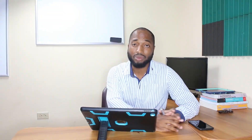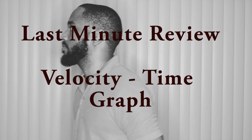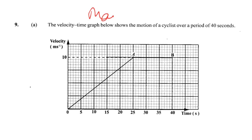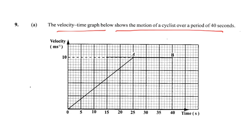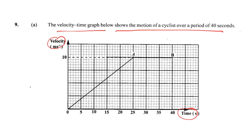Velocity-time graph. So in the question here, this is a very recent question — I think this is May 2017. We've been asked: the velocity-time graph shows the motion of a cyclist over a period of 40 seconds. Now, this is a velocity-time graph. The other type you could get is a distance-time graph. On a distance-time graph, the gradient represents speed. On a velocity-time graph, the gradient represents acceleration.